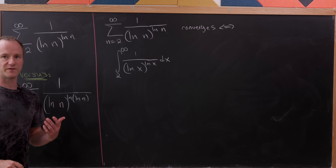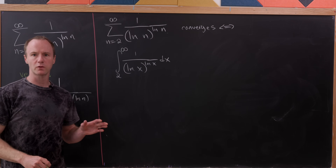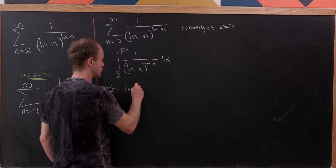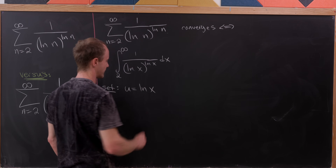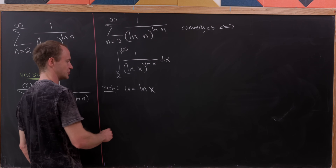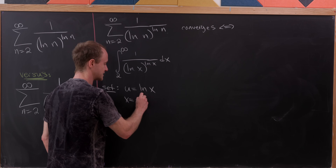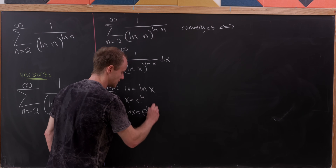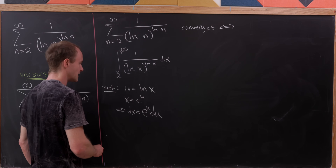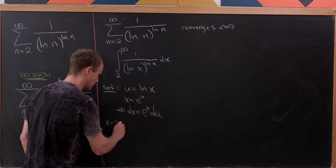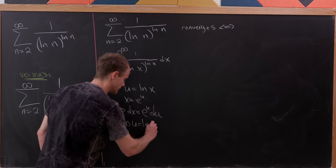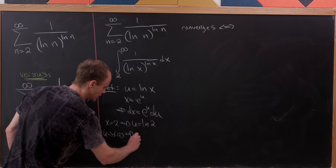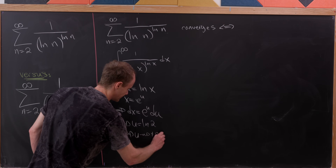Let's determine if that integral converges, starting with a substitution. We set u = log(x), so x = e^u, which means dx = e^u du. When x = 2, u = log(2), and when x goes to positive infinity, u also tends towards positive infinity. That's how the bounds of integration change.